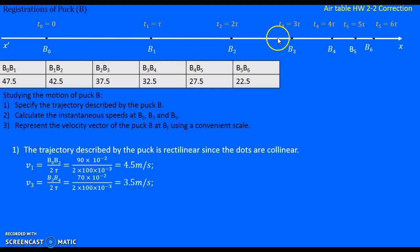vB3 equals B2B4, so B2B3 plus B3B4. It's 37.5 plus 32.5 equals 70 centimeters. We multiply by 10^-2 to convert it to meters and over 2τ. τ is 100 milliseconds, multiply by 10^-3 to obtain seconds. It equals 3.5 meters per second. Similarly for B5.